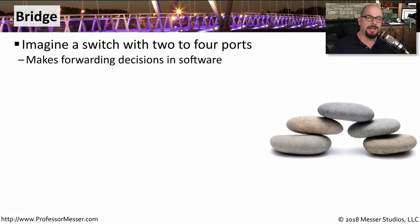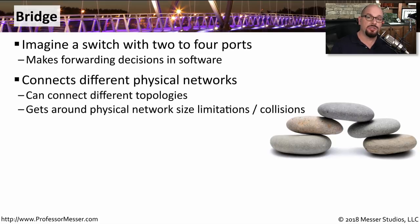Imagine if you had a switch that only had two ports on it, with a network on each side. In the early days of networking, you would have a bridge. A bridge makes forwarding decisions in software based on the MAC addresses of what's on both sides. We commonly used bridges to connect two separate physical networks, which could be different topologies — such as connecting an ethernet network to a token ring network. Bridges could also connect similar topologies, like splitting a large ethernet network into two pieces to minimize collisions.